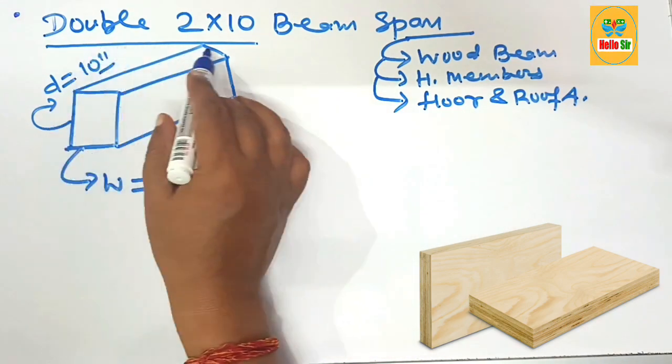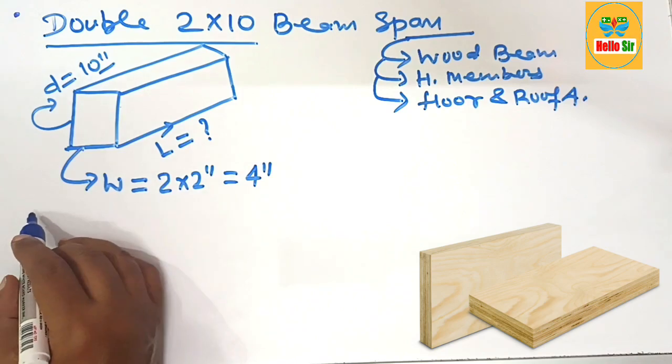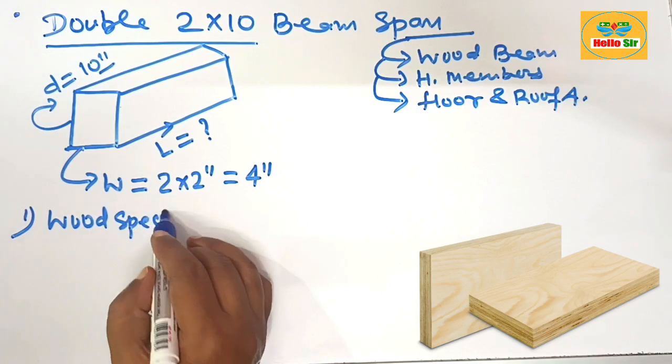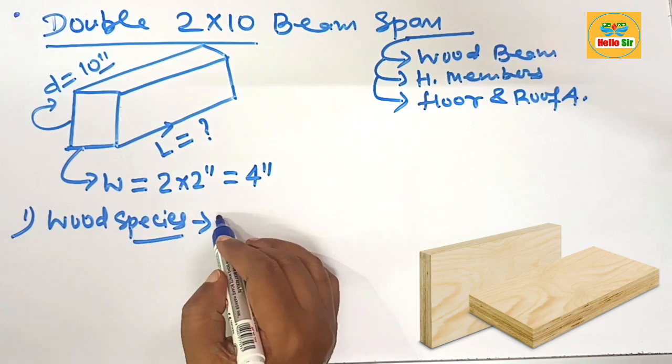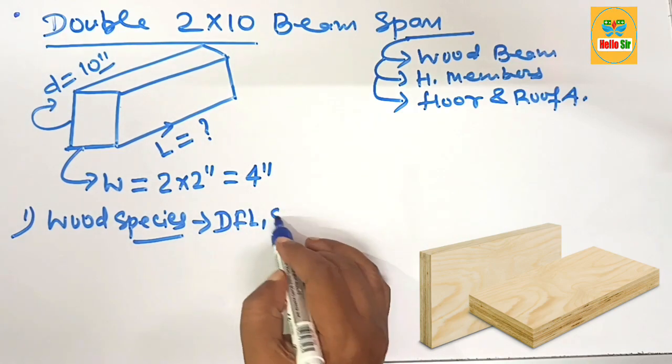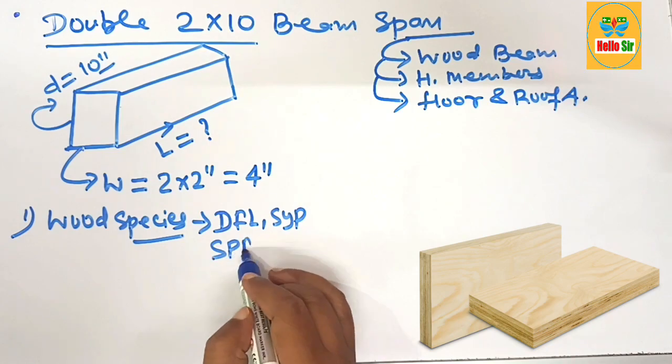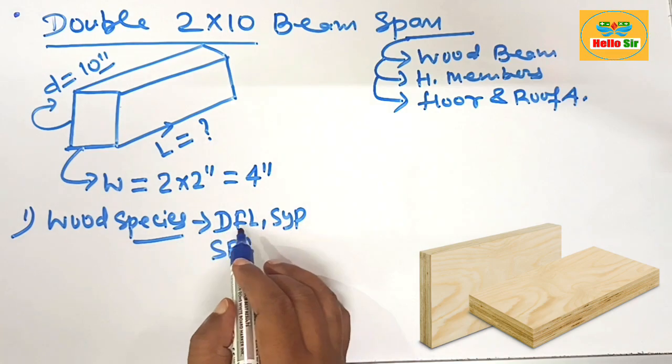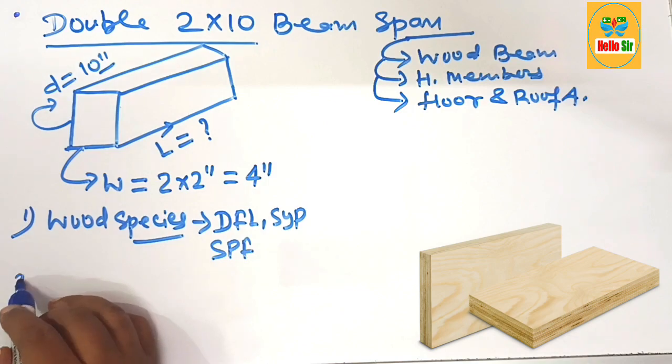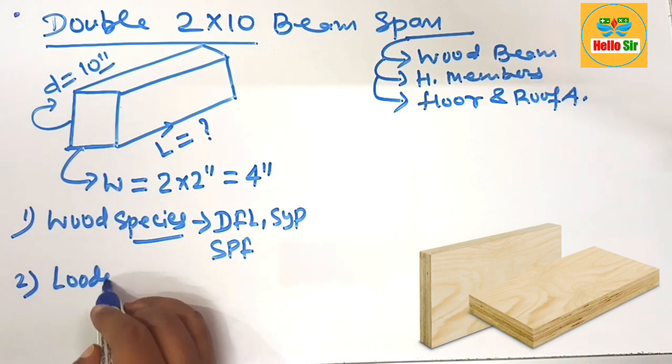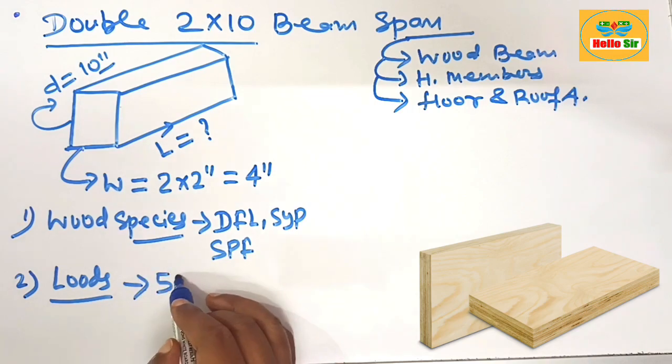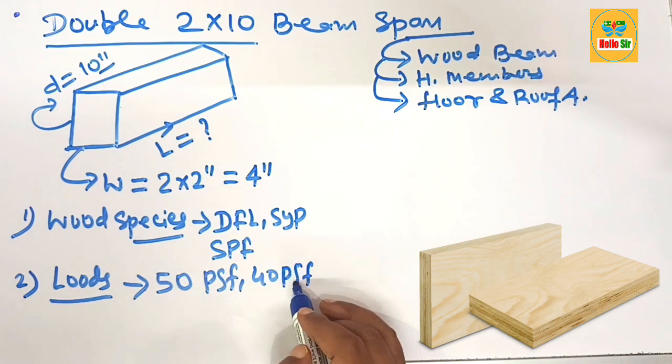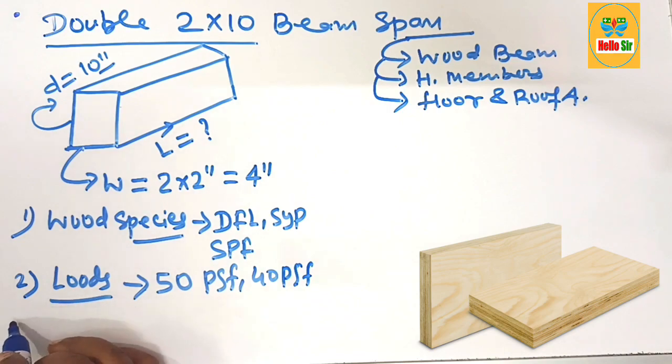The span of beam depends on many factors. Like the wood species - there are different kinds of wood used as dimensional lumber like DFL, like SYP, like SPF. You know that Southern Yellow Pine is the strongest wood species and it can span more as compared to other species. And the second factor is the load conditions acting on the beam, that may be 50 pounds per square foot, 40 pounds per square foot, that consists of dead load and live load.